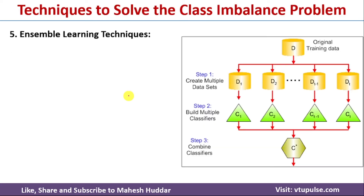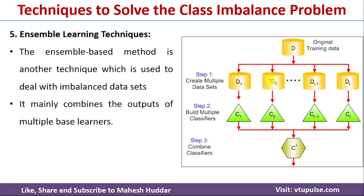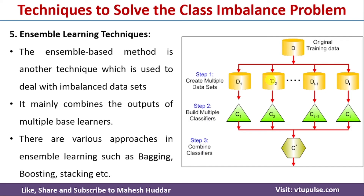The fifth technique is ensemble learning. Rather than depending on a single model, the dataset is divided into multiple sub-datasets — D1, D2, and so on — each given to a different classifier C1, C2, etc. Each classifier performs classification on its sub-dataset and the results are combined using ensemble learning. Techniques like bagging, boosting, and stacking all help handle class imbalance. Links for those videos are in the description.